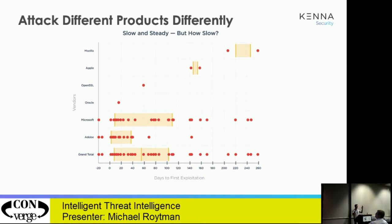Looking at the 25th and 75th percentile bars, Adobe is somewhere between 3 and 40-something days for exploitation, with a median of about 21 days. So if your SLA on criticals is 30 days, you've already blown it for every Adobe vulnerability — those are already being exploited by the time you've met that SLA. Microsoft is all over the place: some things are being exploited in seven days, 14 days; some might take a year. That's because Microsoft is a huge vendor — an IIS vulnerability might get popped in seven days, while something requiring user interaction like a PowerPoint vulnerability might take 90 days to develop an effective exploit.